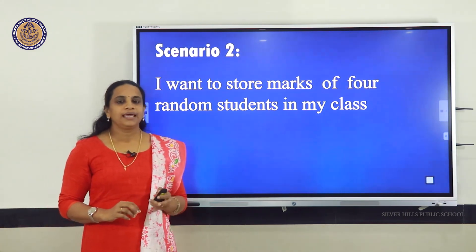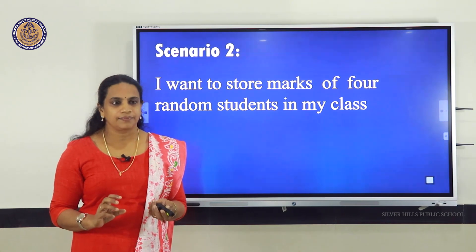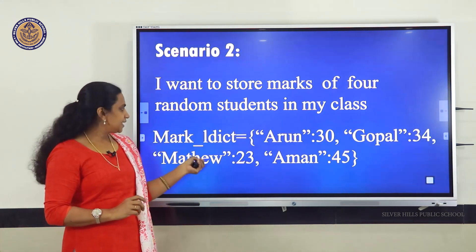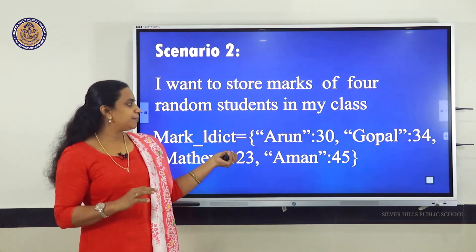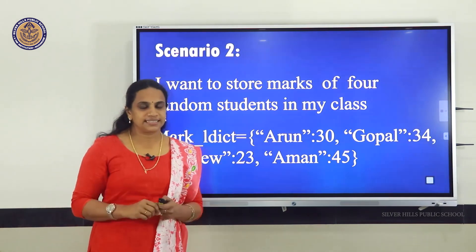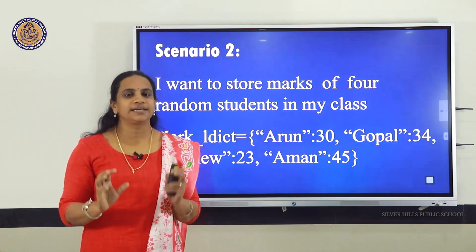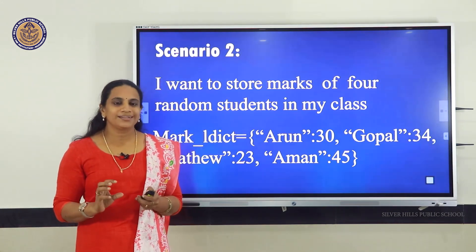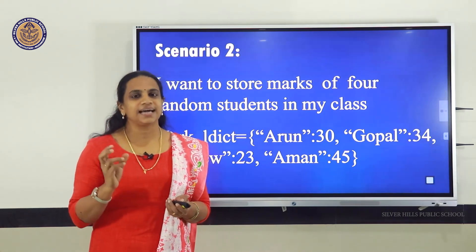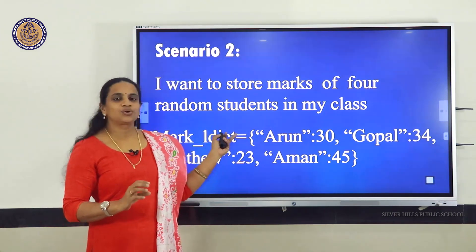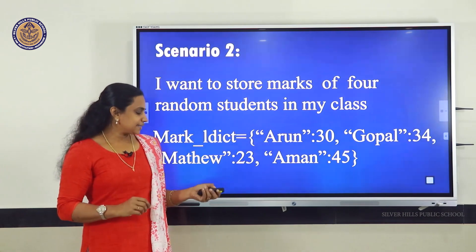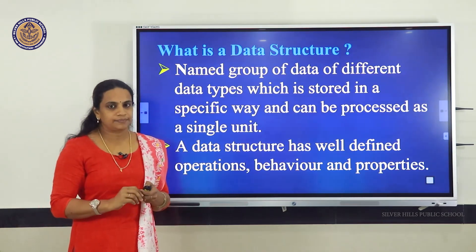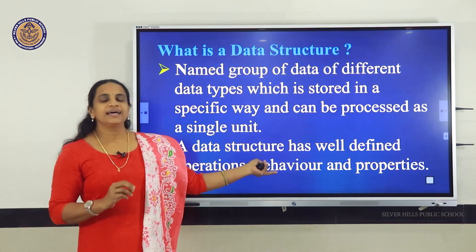In scenario 2, I want to store marks of any 10 students' details from my class. Which data structure is apt? Obviously, it is dictionary. Dictionary is a key-value pair, so we can store any random details easily. And if I want to store all students' details permanently in a storage device, we can use files — text files, binary files, and CSV files. A data structure is a named group of different data types processed as a single unit, having operations, behavior, and certain properties.